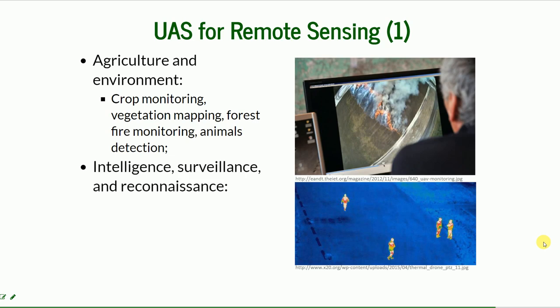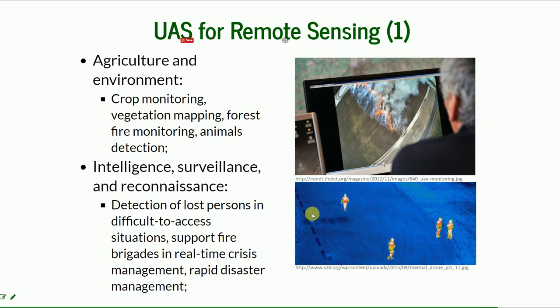UAS can also be used for intelligence, surveillance, and reconnaissance. Thermal imagery is widely used for detection of lost people in difficult-to-access situations in the mountains, or to support fire brigades in real-time crisis management and rapid disaster management. It's also used for surveillance in a military context.